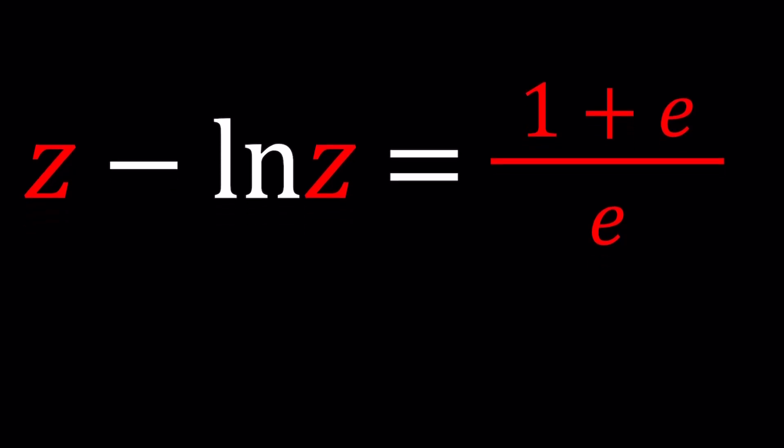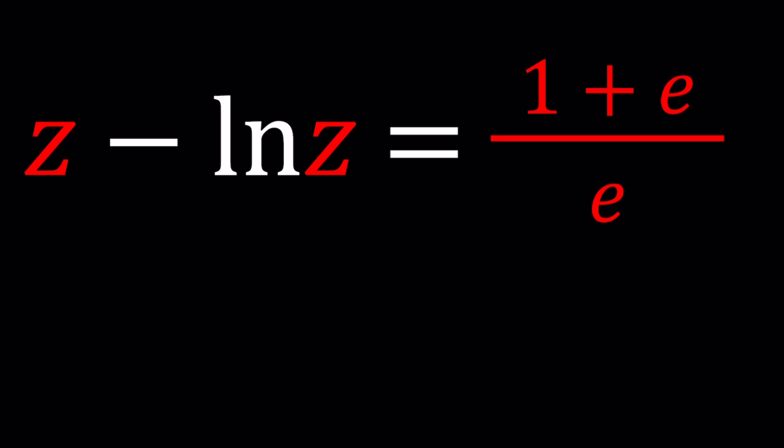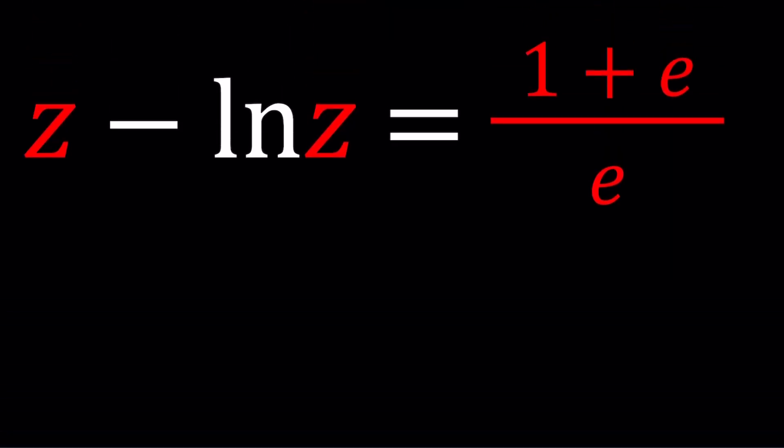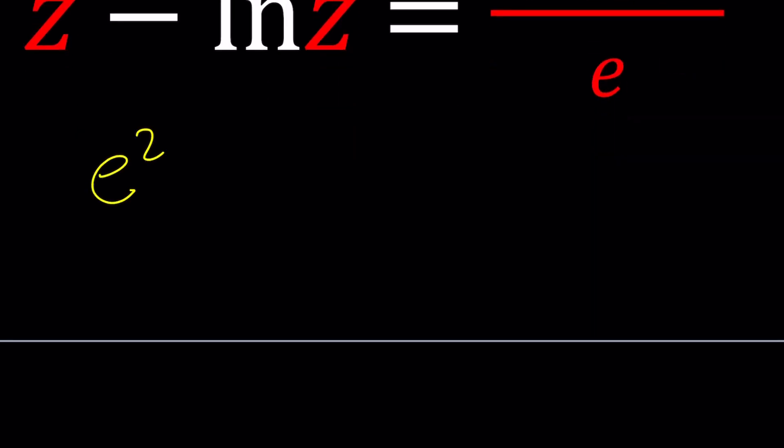We have this weird non-standard equation, Z minus ln Z, 1 plus E over E. By non-standard, I mean this is not a polynomial, not just exponential or logarithmic by itself. It's just a mixture of different things. So, we have to use a non-standard approach. Here's what I'm going to do. I'll start with the original equation and do E to the power of both sides. So, I'm going to do E to the power Z minus ln Z equals E to the power 1 plus E over E. Because if A is equal to B, then E to the power A equals E to the power B. Right?